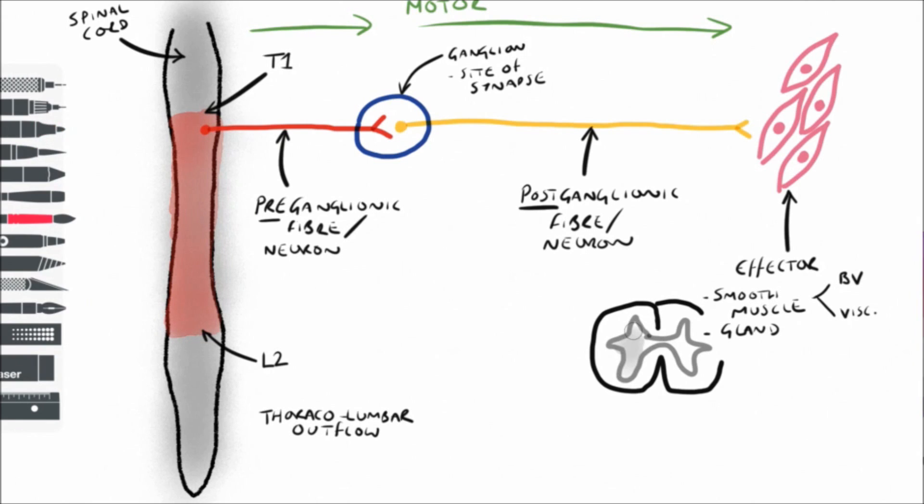The cell body of the first neuron, the preganglionic neuron, is found in the lateral horn of the spinal cord, with its axon exiting into the anterior or ventral roots along with somatic motor axons.